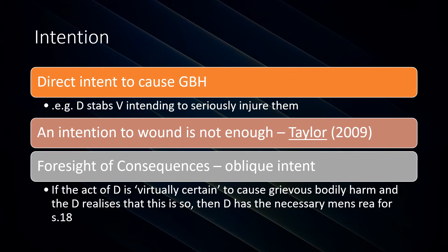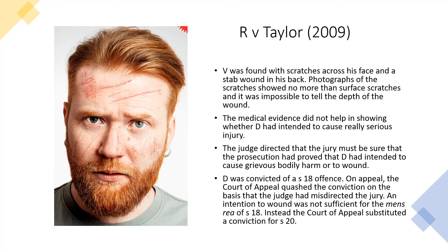In Crown v Taylor (2009), the victim was found with scratches across his face and a stab wound on his back. Photographs showed no more than surface scratches and it was impossible to tell the depth of the wound. The medical evidence did not help in showing whether the defendant had intended to cause really serious injury. The defendant was convicted of a section 18 offence, but on appeal the Court of Appeal quashed the conviction on the basis that the judge had misdirected the jury — intention to wound is not sufficient for the mens rea of section 18; it must be an intention to cause GBH.